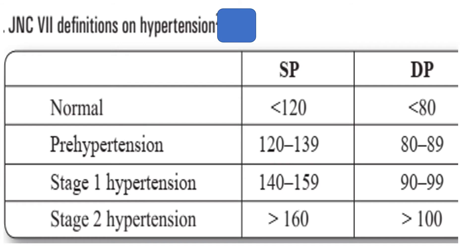Now I will talk about epidemiology and prevention of hypertension. Definitions: Normal blood pressure is systolic less than 120 and diastolic less than 80. Pre-hypertension is systolic 120 to less than 140 and diastolic 80 to less than 90. Stage 1 hypertension is systolic 140 to less than 160 and diastolic 90 to less than 100. Stage 2 hypertension is systolic more than 160 and diastolic more than 100.